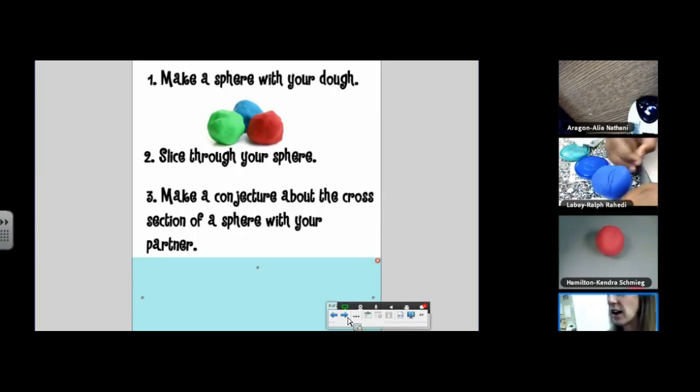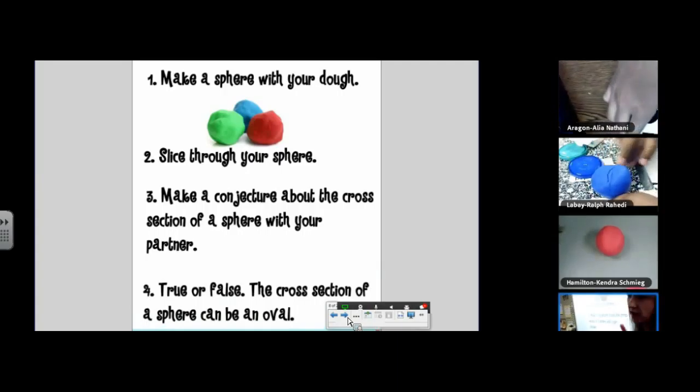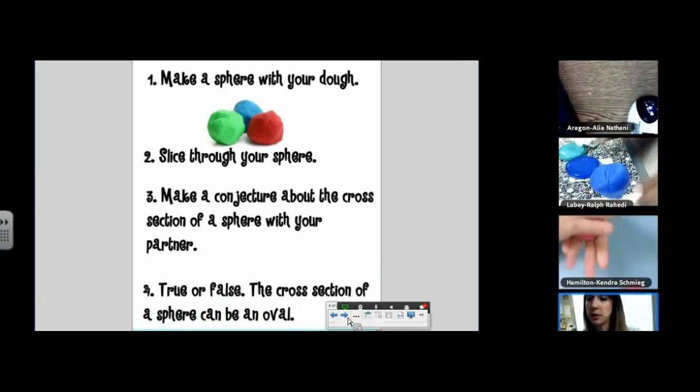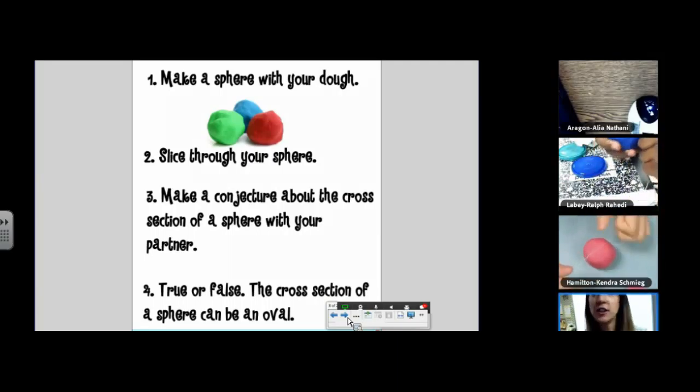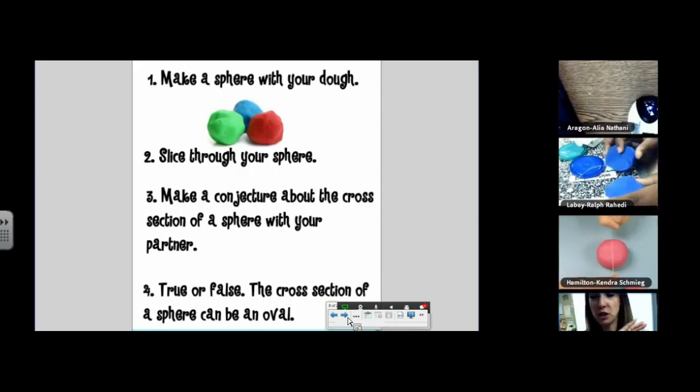I know you could have done that in second grade, but this one is a little bit deeper thinking. Don't say the answer yet. I want you to play with your floss and play with your sphere, and I want you to create all different cross-sections. I want you to do one where you don't go through the middle. I want you to go diagonally. I want you to do a small cross-section, a large cross-section, and I want you to figure out if the cross-section of a sphere can be an oval.